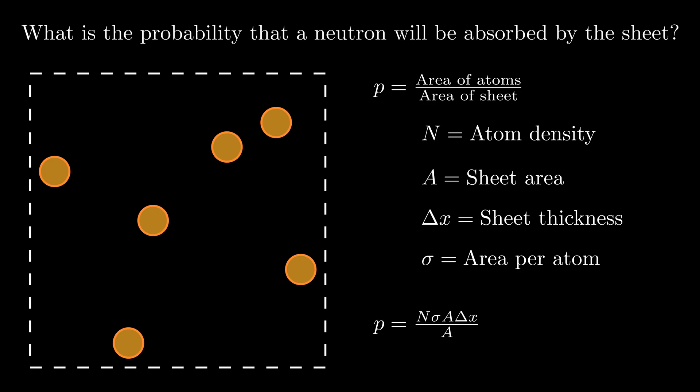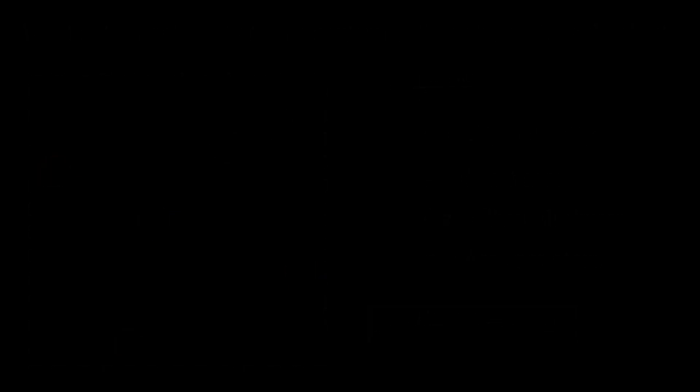And then canceling out A shows us that the probability of absorption is equal to the atom density of the sheet material, times the area of an individual atom in the sheet, times the thickness of the sheet. And this makes sense, as we would expect the probability of absorption to go up if the sheet was made of a more dense material, if the atoms were larger, or if the sheet itself was thicker.